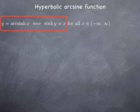Let's try to reformulate this and express the function in terms of more familiar functions. Starting from the right-hand side: x = sinh(y), which by definition equals (e^y − e^(−y))/2. We can rewrite this as e^y − e^(−y) = 2x, or equivalently e^y − e^(−y) − 2x = 0.